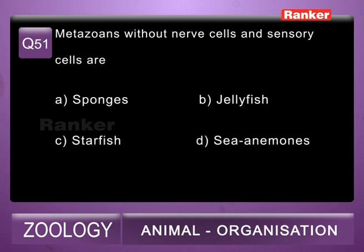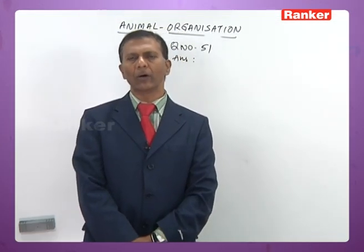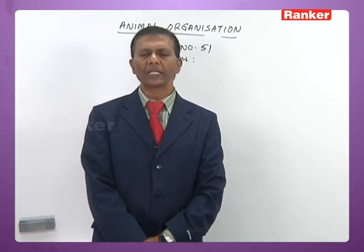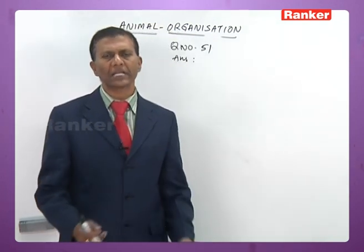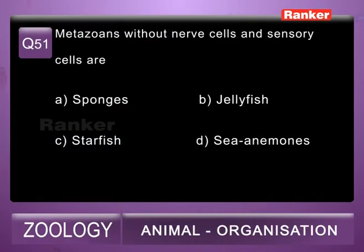Question 51: metazoans without nerve cells and sensory cells are A) sponges, B) jellyfish, C) starfish, D) sea anemones. Poriferans are the first formed metazoans with a cellular grade of organization but without any sensory or nerve cells. There is no coordination between cells, and cells cannot form tissues, organs, or organ systems. The 51st question correct answer is A, sponges.